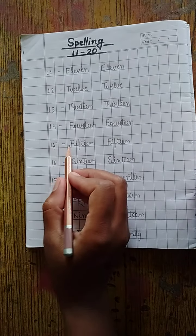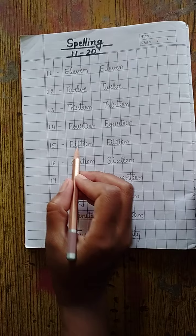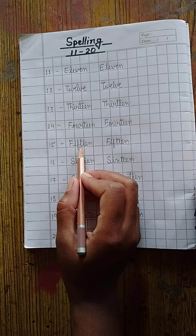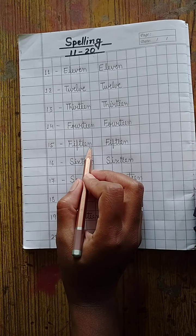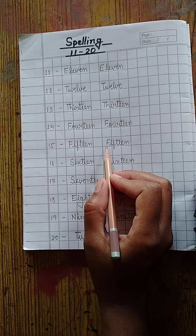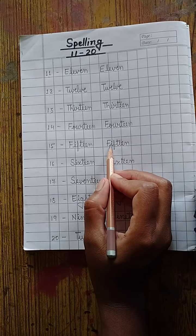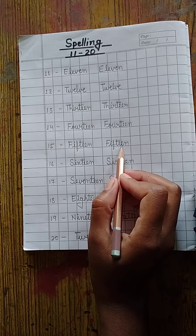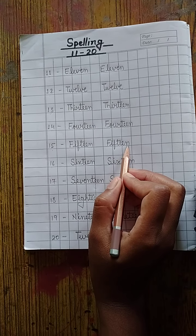Now next. 15. F I F T E E N. 15. Once again. F I F T E E N. 15.